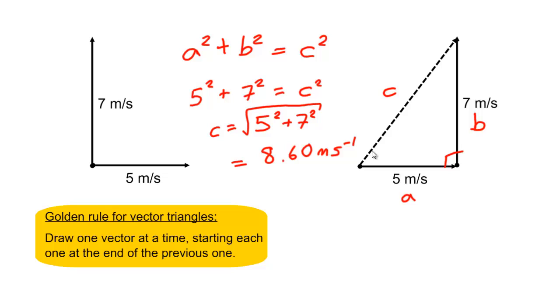To work out the direction, we need to use trigonometry to calculate the angle from the horizontal. We know the adjacent, we know the opposite. We also know the hypotenuse because we've just calculated it, but it's not good practice to use something that you've calculated unless you have to.